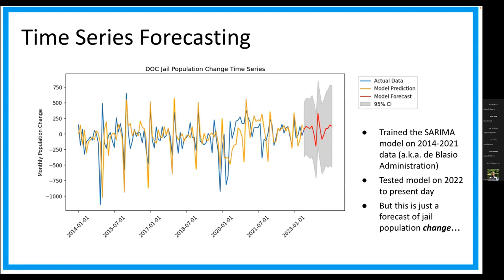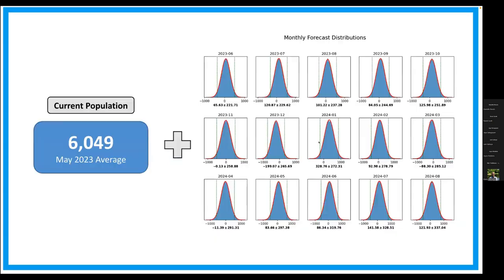What I had to do is — you'll see this gray area, which is the confidence interval — our model forecast says that with 95% confidence, it's going to fall anywhere in this gray region. So I created 15 distributions — basically the likelihood of what the population change is going to be month to month. Using the current population, I added up the average to get our final projection at the end.